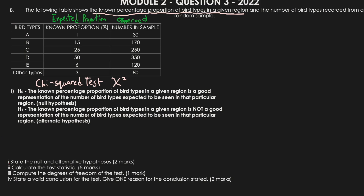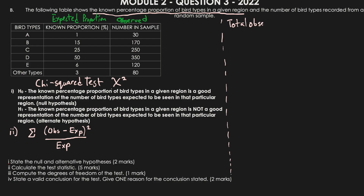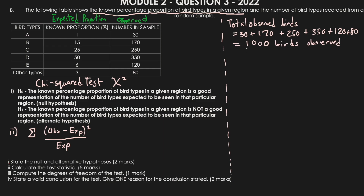The standard formula for the chi-square test statistic is the sum of the observed values minus the corresponding expected values, squared, divided by the expected value. The total number of observed birds is 30 plus 170 plus 250 plus 350 plus 120 plus 80, which gives us a total of 1000 observed birds.